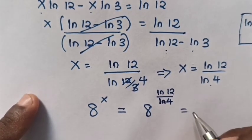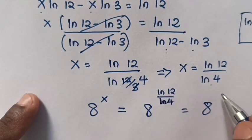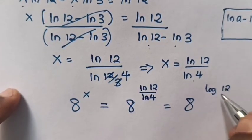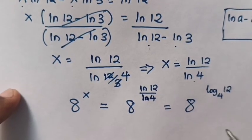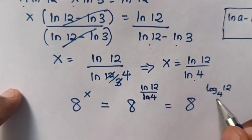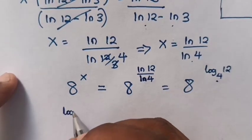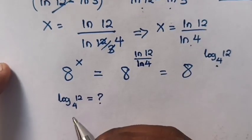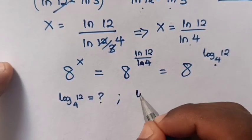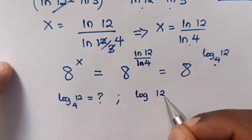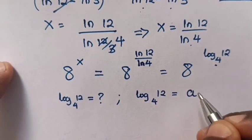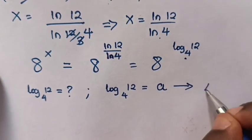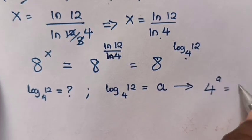Now we are going to simplify this. It will be 8 power log base 4 of 12. To find the value of log base 4 of 12, we let log base 4 of 12 equal a.